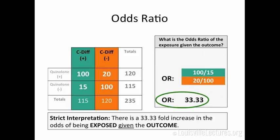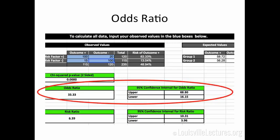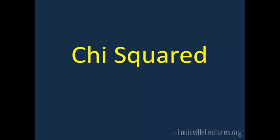The strict interpretation is that there's a 33-fold increase in the odds of being exposed given the outcome. Some people will say, because of Bayes' theorem, you can say there's a 33-fold increase in developing C. diff if given quinolone. Statistically you can say that, but if you think about how we collected the data, we started with C. diff and looked back in time for quinolone exposure. So another way to interpret it in a presentation: there's a 33-fold increase in the odds of having received quinolone given you started with C. diff. Again, you get your confidence interval — does it contain one? That informs us as to statistical significance.